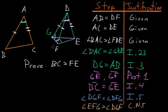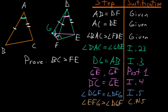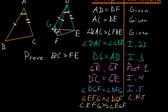Also, angle EGF is bigger than angle DGF for the same reason — by Common Notion 5. Since EFG is bigger than DGF, and DGF is itself bigger than EGF, we conclude that angle EFG is much bigger than angle EGF.